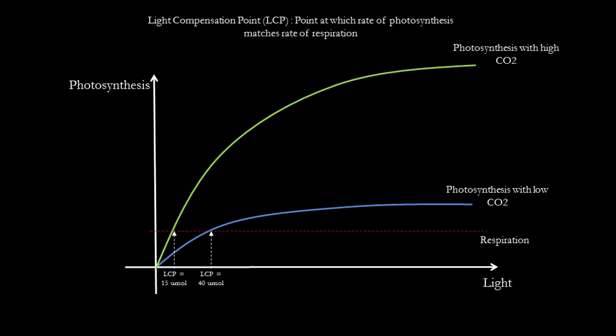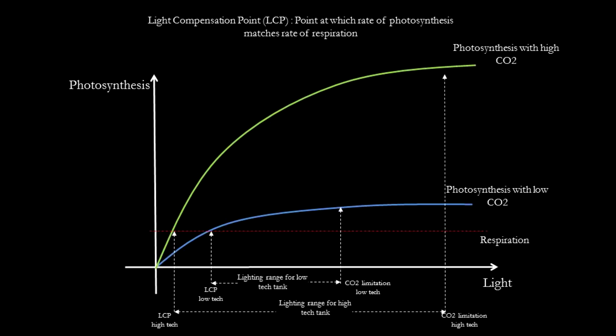At the other extreme end, CO2 also lowers the minimum amount of light necessary for plant growth. In a tank devoid of CO2, the plant must devote considerable energy to CO2 seeking activities. However, with CO2 enrichment, the plant can devote the same energy to growth instead. This means that the range of lighting that will grow plants is much wider in a CO2 enriched tank. Plants that will not grow in the shade in a low-tech tank may do so when there is CO2 injection.